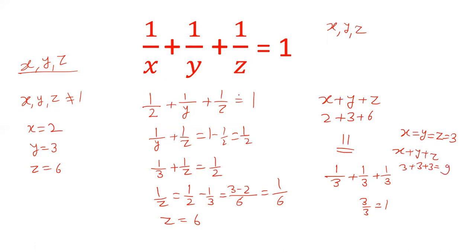So when x, y, and z are distinct, the minimum sum of x + y + z is 11. And when x, y, and z are not distinct and may be equal, then the minimum value is 9.